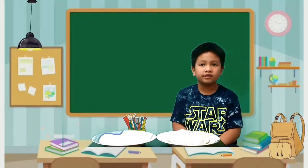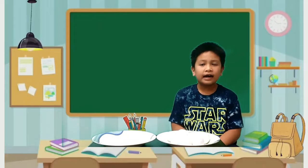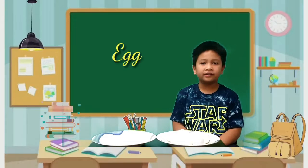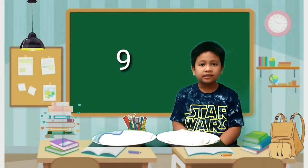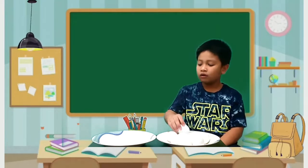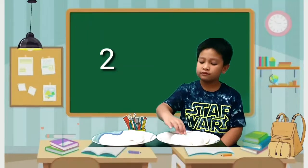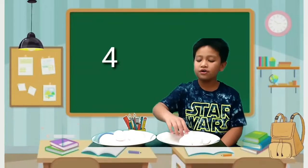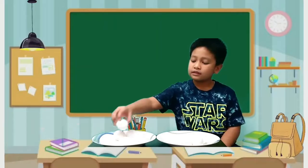Now my mom is going to cook omelette. I have the main ingredient which is egg. I have here 9 eggs. And she is going to cook 6 of them: 1, 2, 3, 4, 5, 6.